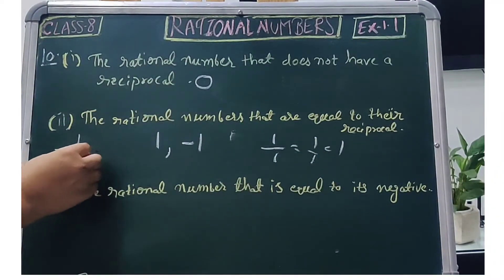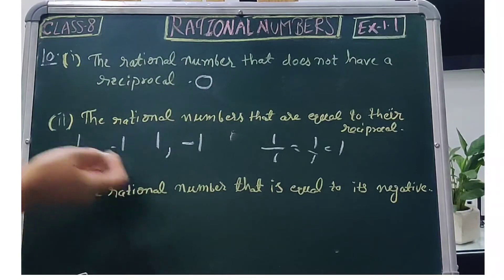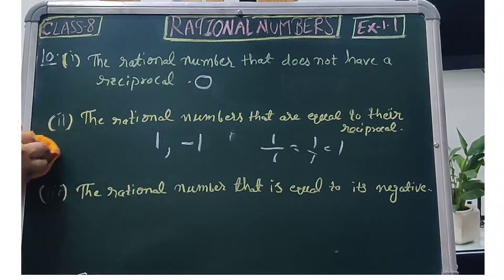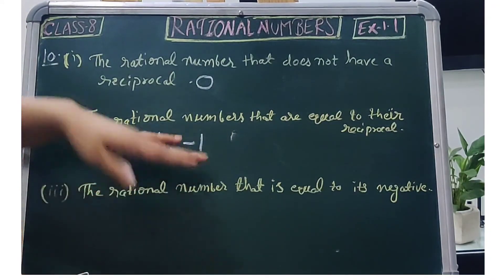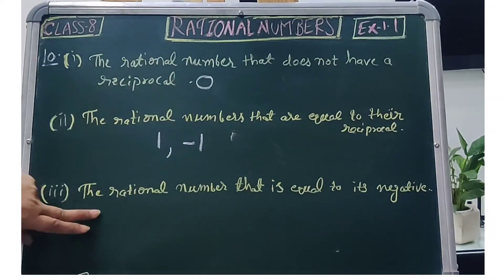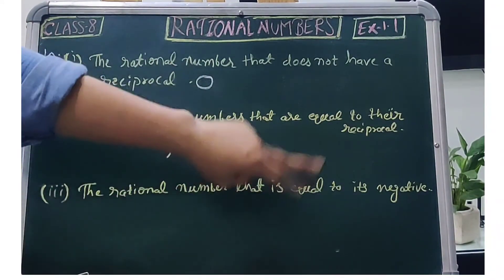What is the reciprocal of minus 1? So the rational numbers that are equal to their reciprocal are 1 and minus 1. The rational number that is equal to its negative.